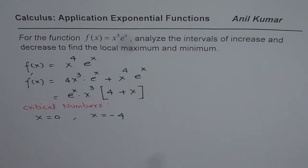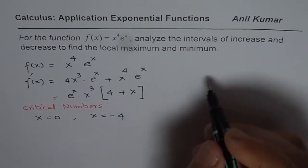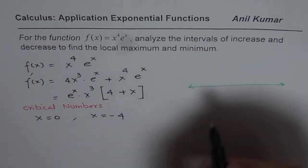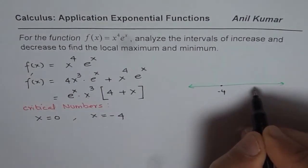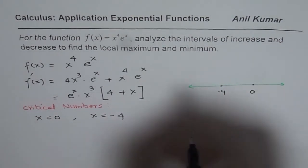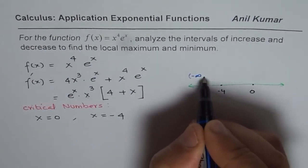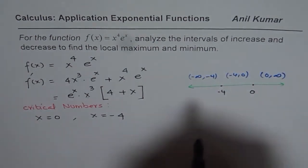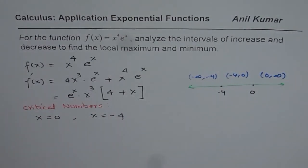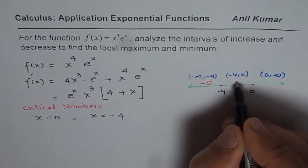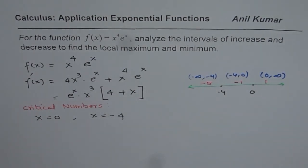At these critical numbers we will analyze the increasing and decreasing intervals. On a number line we have −4 and 0 as critical numbers, giving us three intervals: from −∞ to −4, from −4 to 0, and from 0 to +∞. Within these intervals we take test points: −5, −1, and +1 respectively.